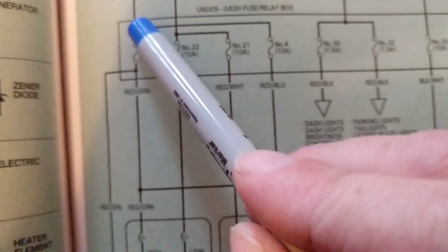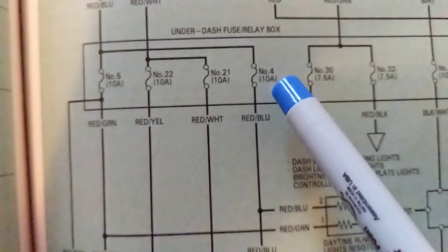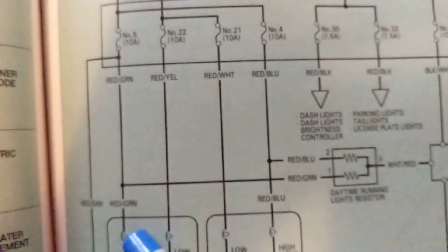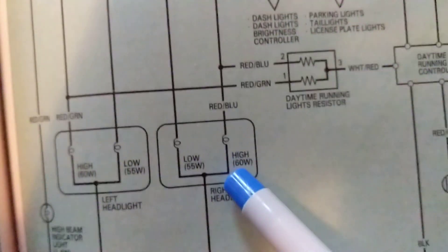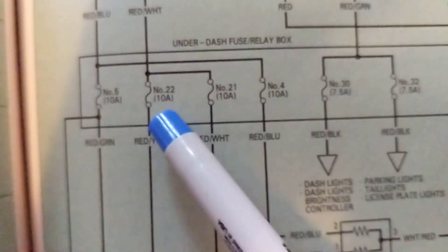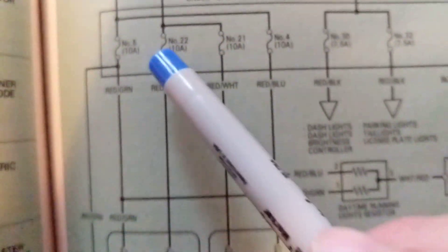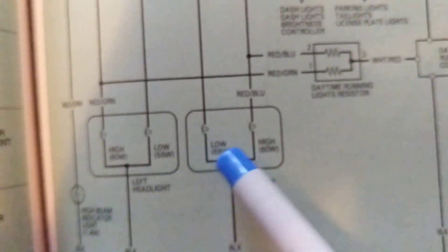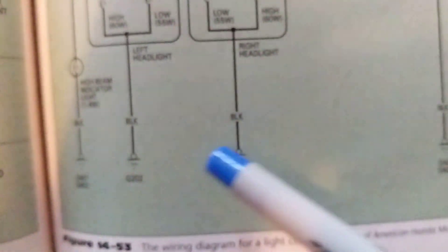These two - if you want high beam, you go right here. Number four and number five are the high beam. As you know, number 22 and number 21 are for the low beam, left and right. And they all go to ground through a black wire.